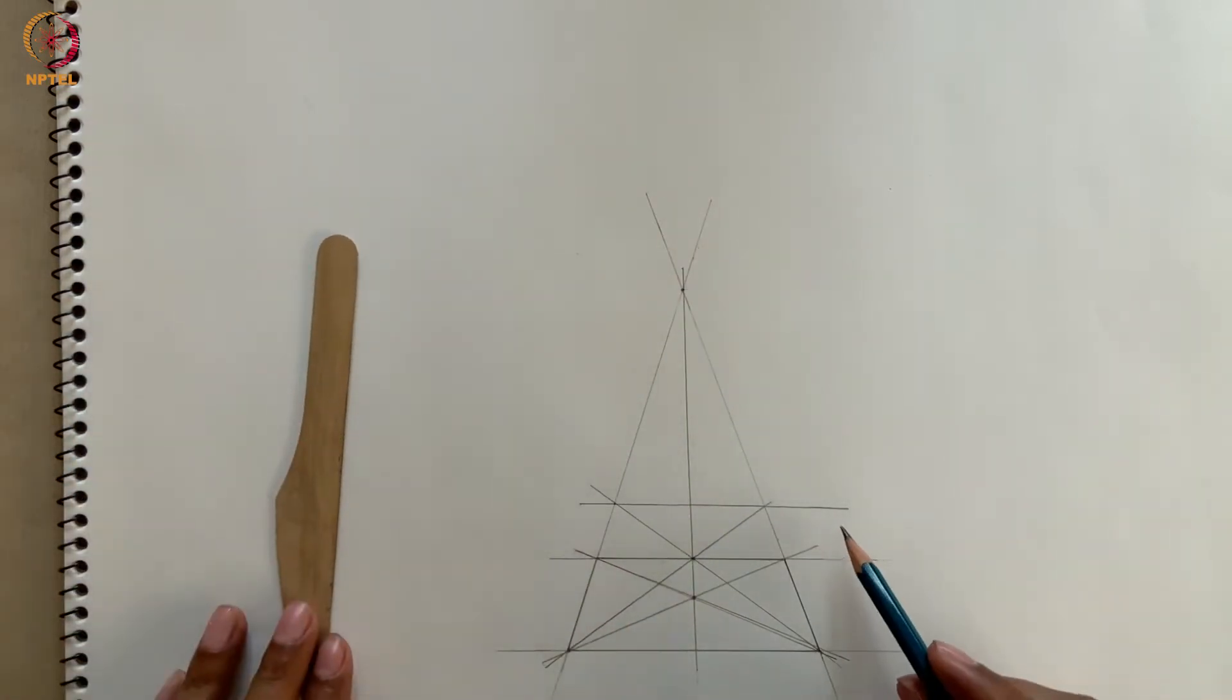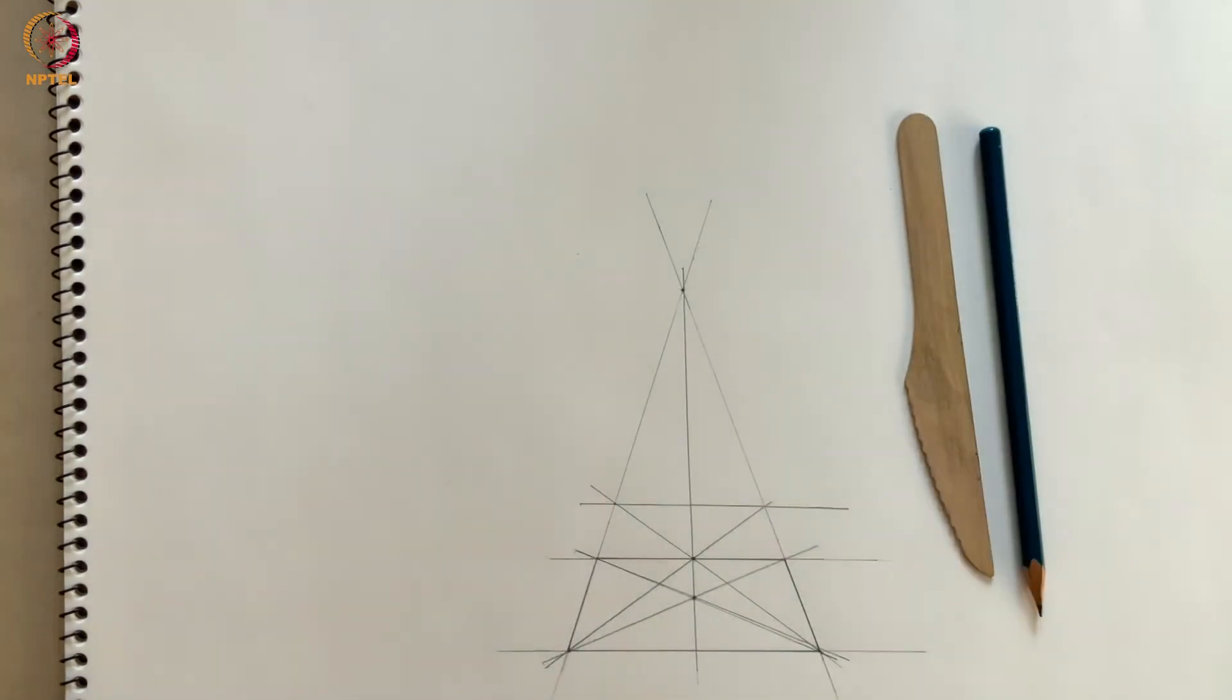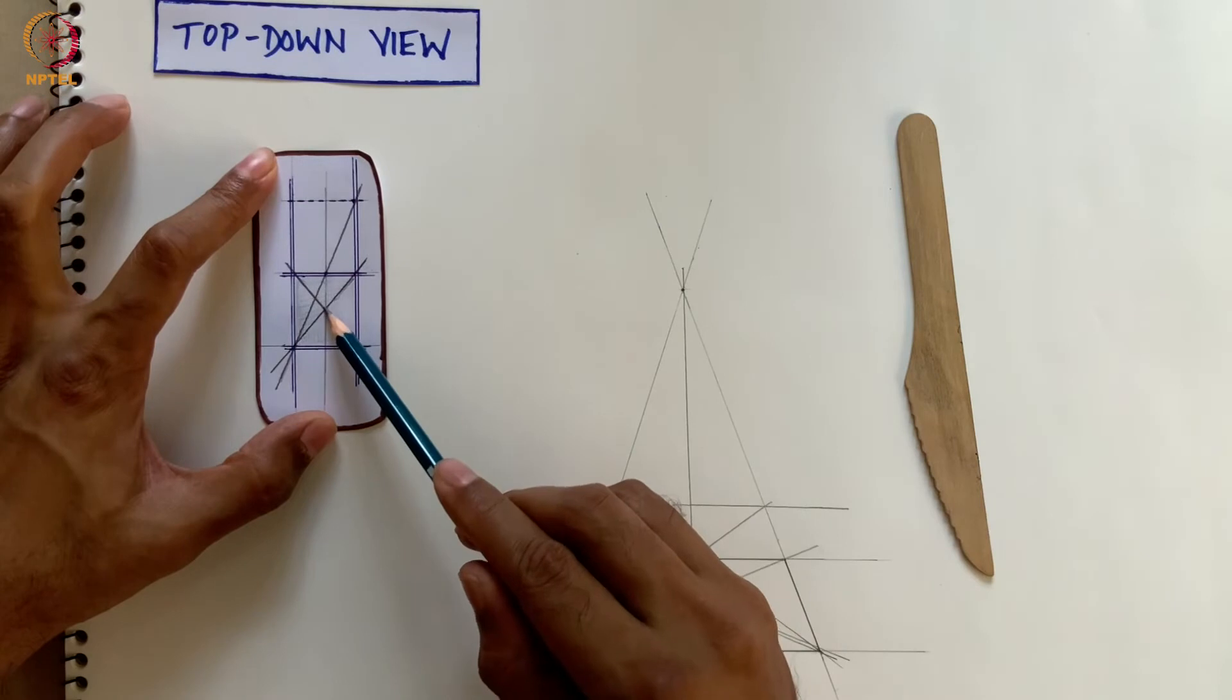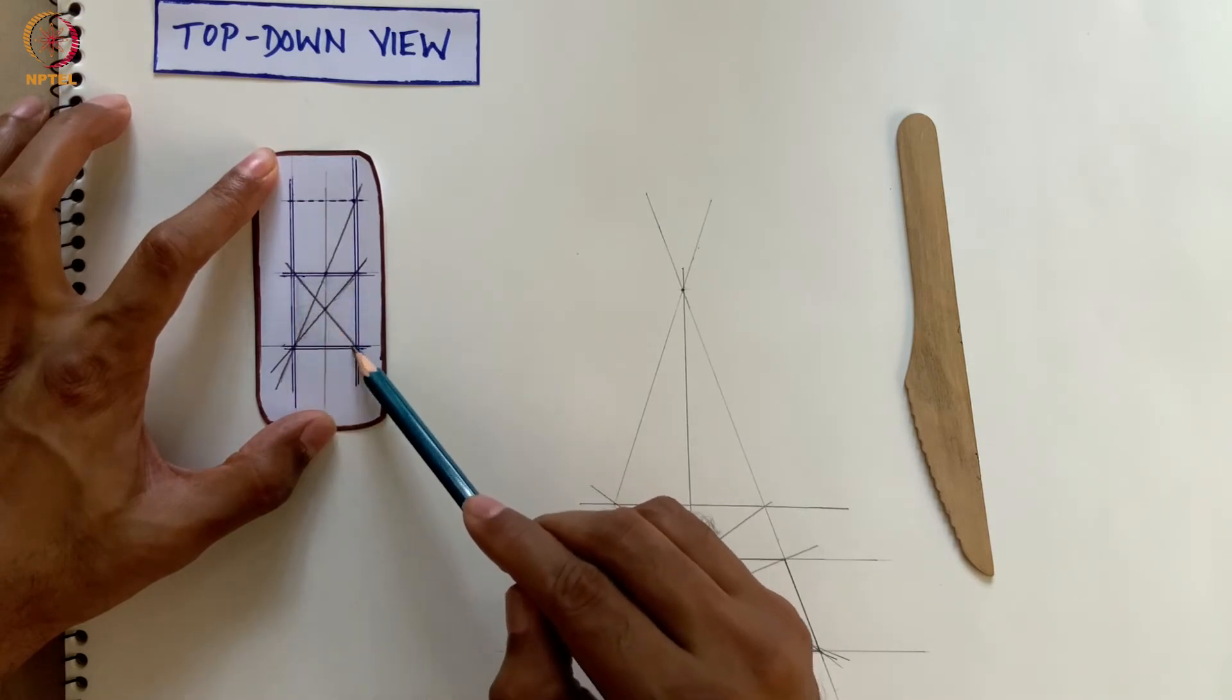It may be useful to review what we've done so far from the top-down view. We started by finding the center point of the tile by connecting the opposite corners.